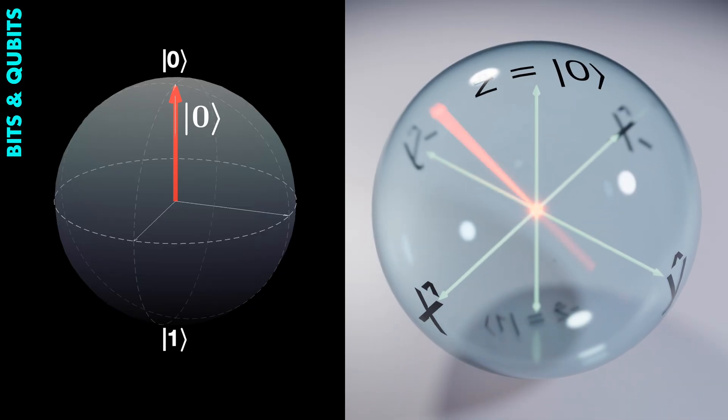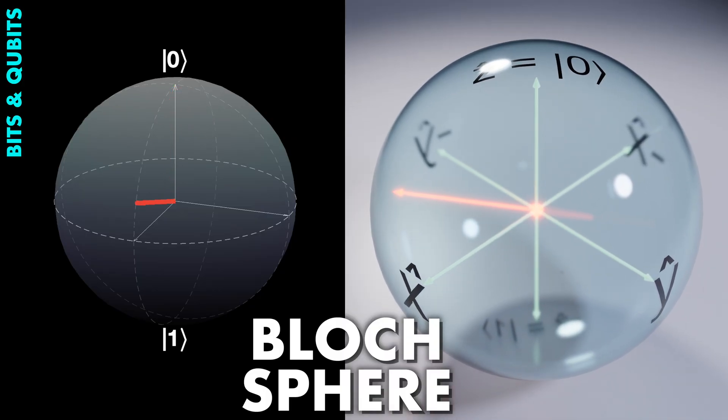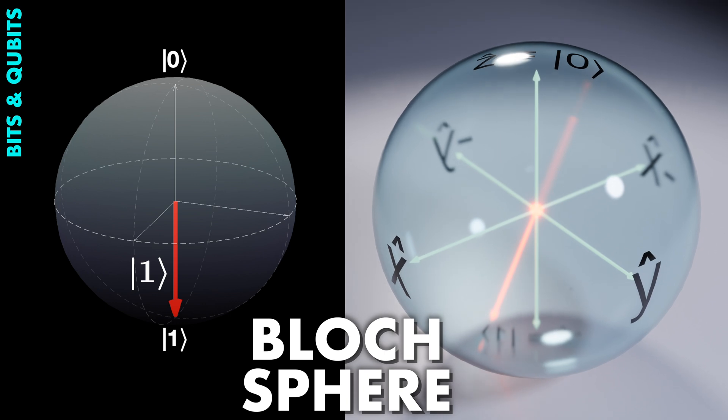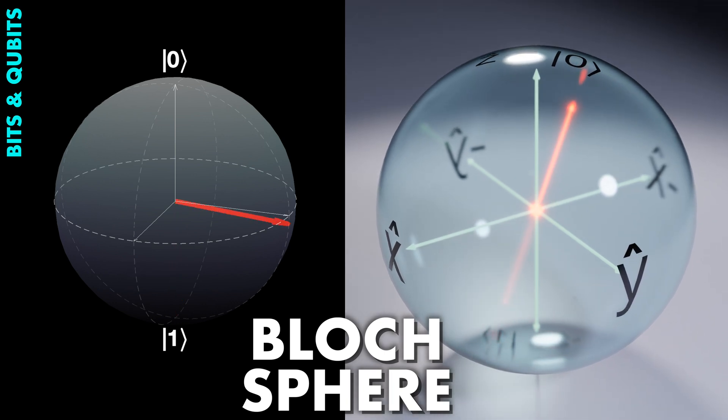We represent this fact by the Bloch sphere, an arrow inside a sphere. The arrow doesn't show a direction in space, rather it shows which mixture of zero and one the system is in. It is a state vector.